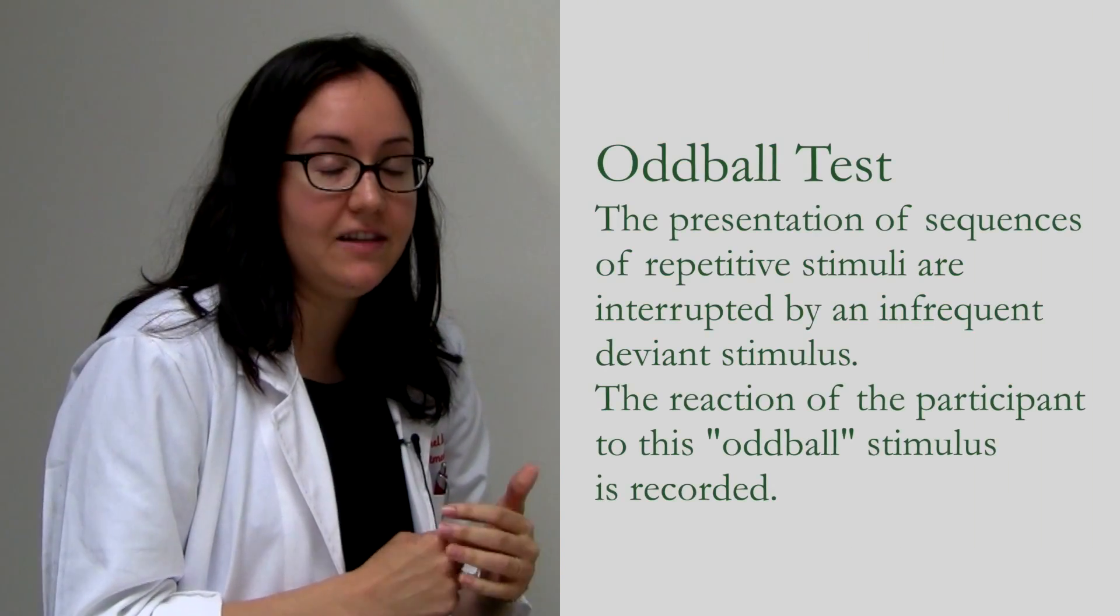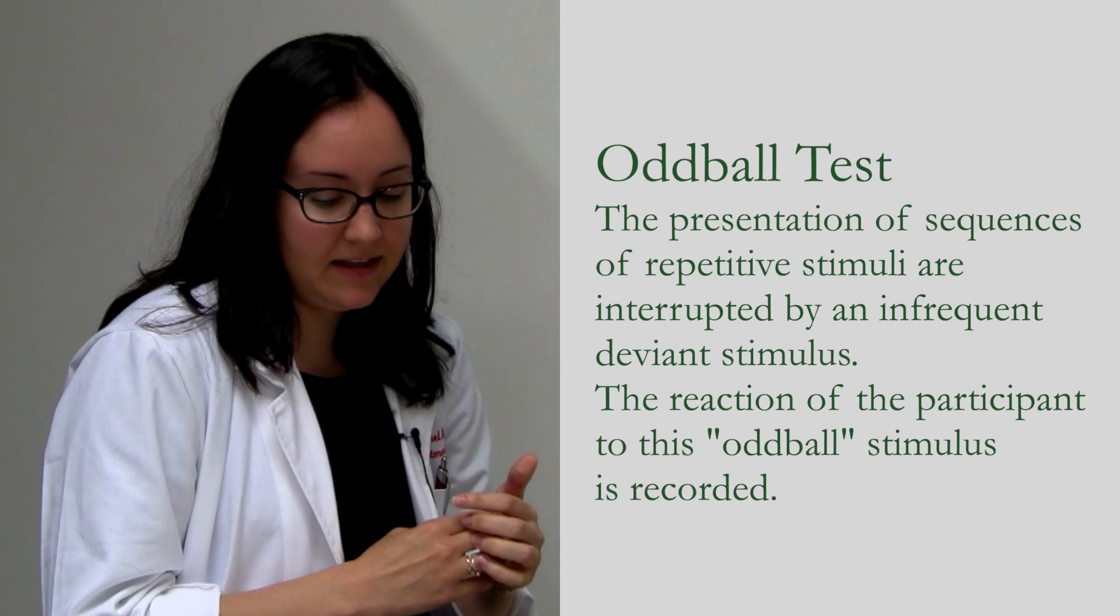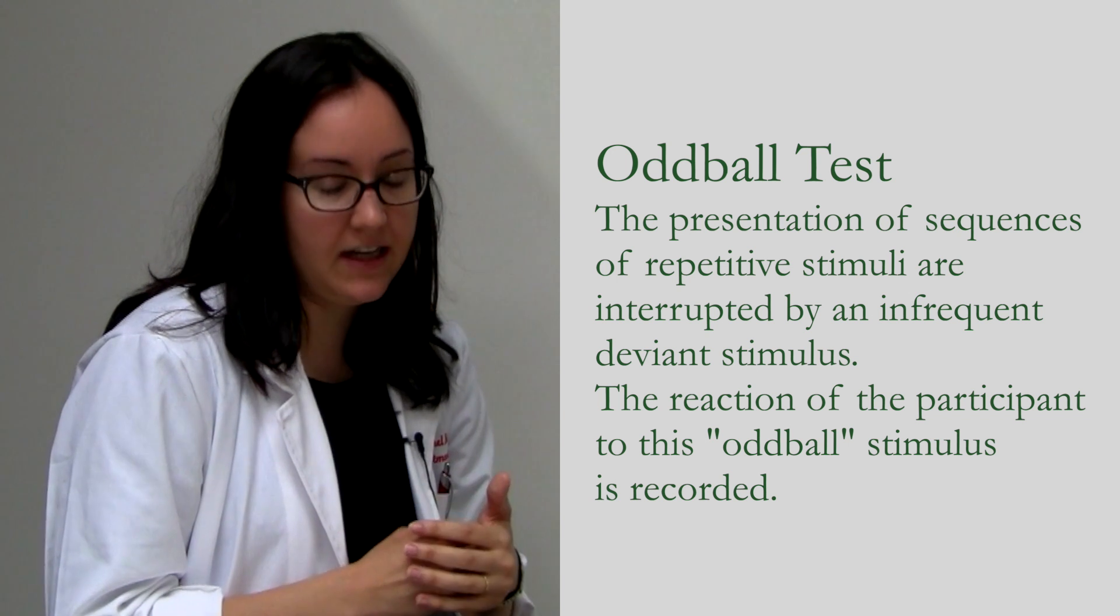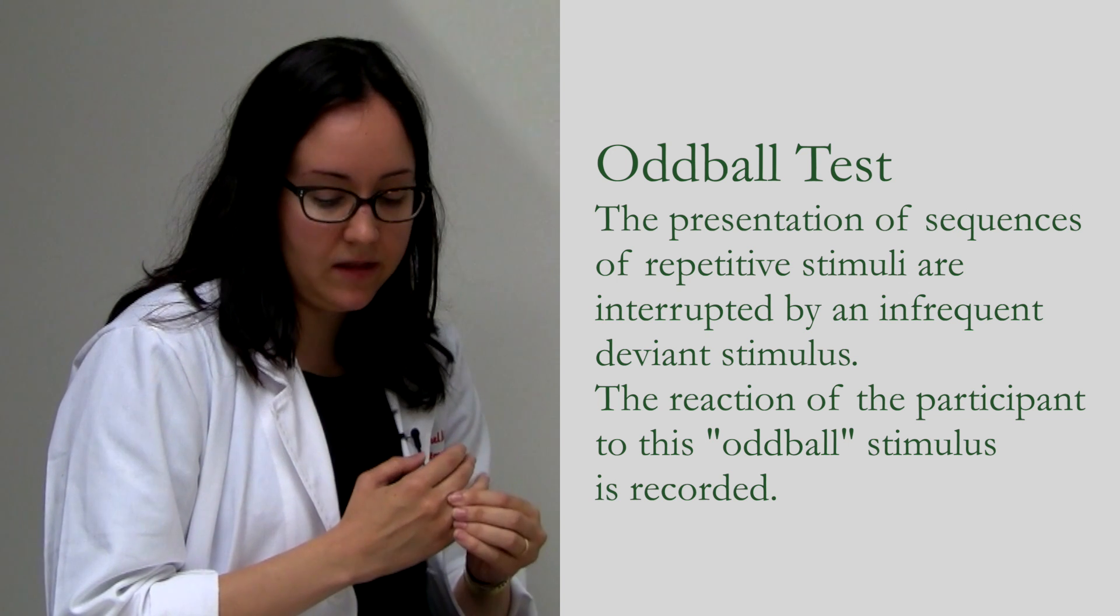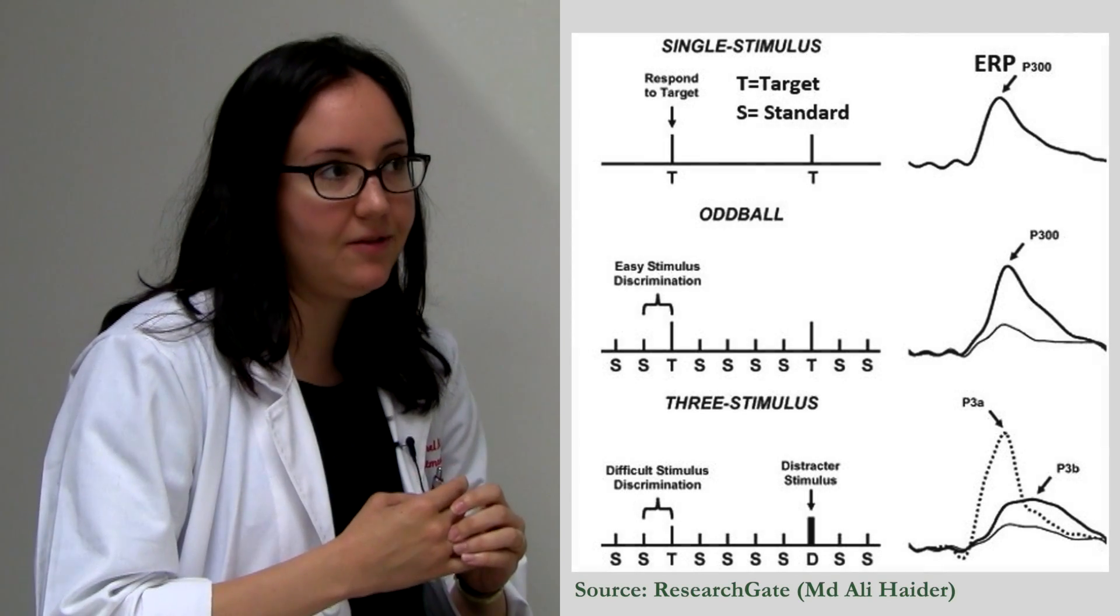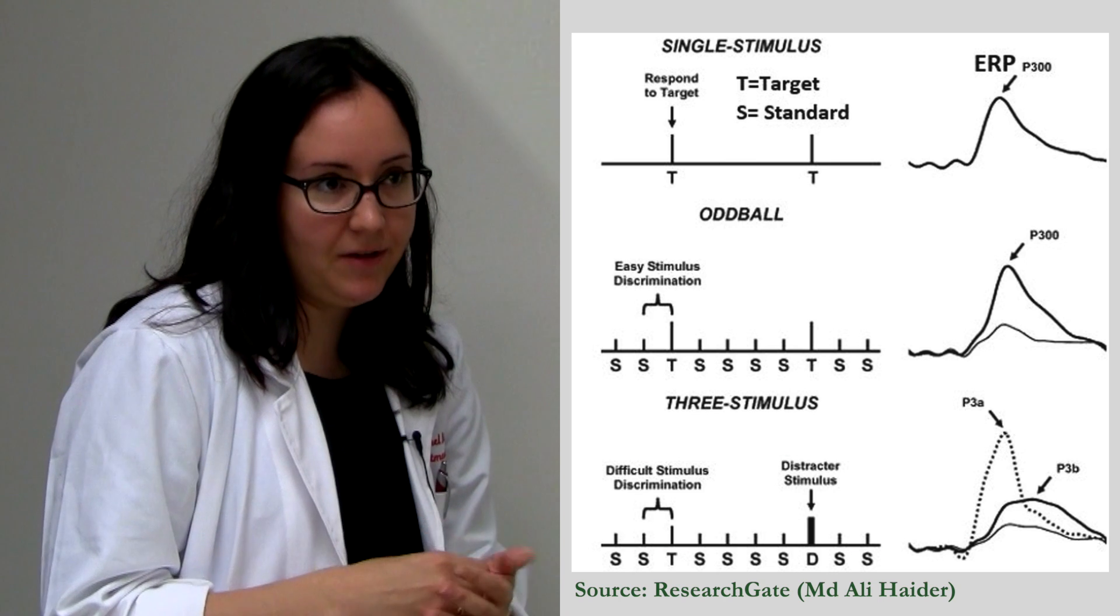So for an example, the oddball task has been used for decades to elicit a P3 response. And this is an ERP related to stimulus discrimination and attention. So P3 response amplitude will increase if the stimulus is novel, in other words, an oddball stimulus, in comparison to frequent stimuli.